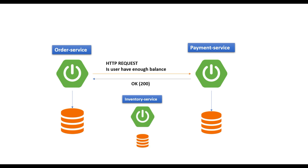But what if in the future you want to introduce another service like inventory service with its own database? Order service would need to send another HTTP request to check product availability. This is not a good approach — for a simple requirement we are firing N number of HTTP requests. Additionally, order service always assumes payment service and inventory service are up and running. If payment service is not available, it will impact your revenue. So there are two main disadvantages: firing N HTTP requests, and revenue impact during downtime.